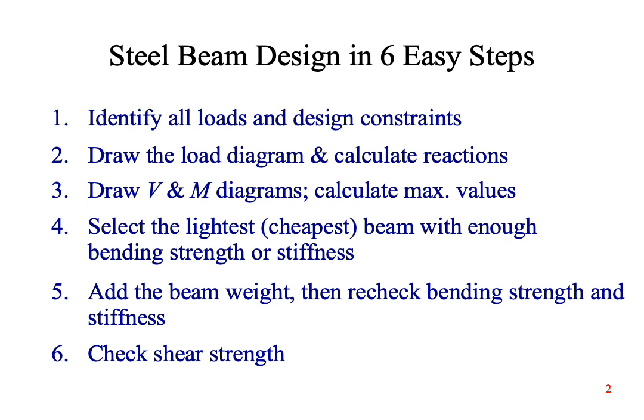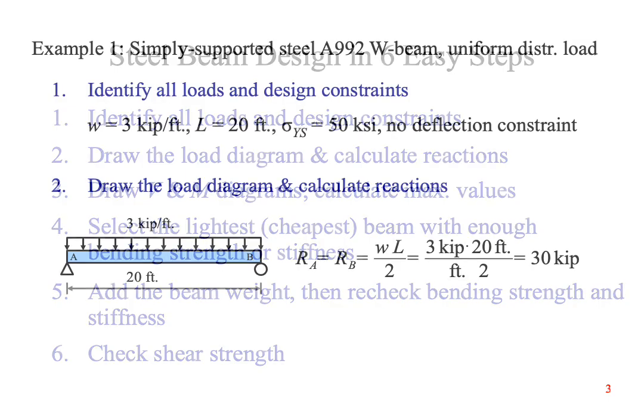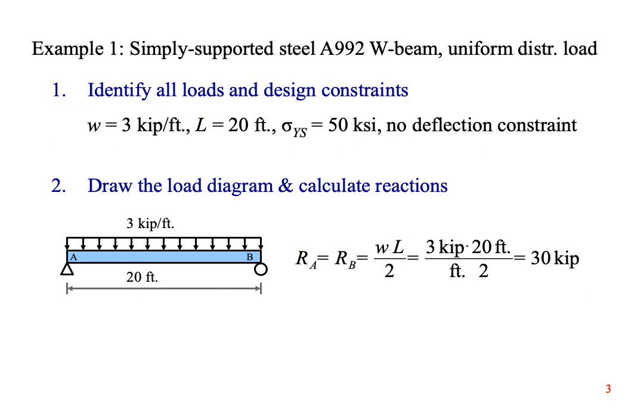Let's work out some example problems. The first example problem is a simply supported beam with a uniform distributed load. We'll use a wide-flange steel beam made of A992 steel. Step one is to identify all the loads and design constraints.